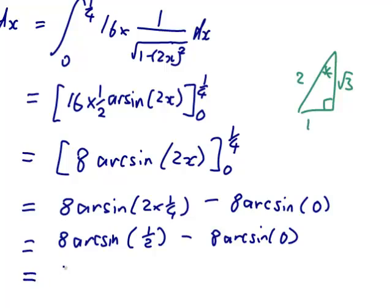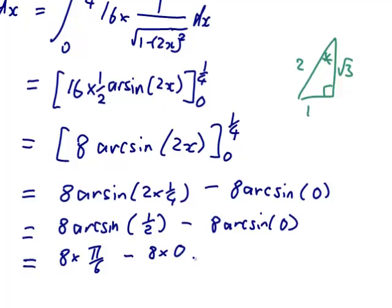So we've got 8 times pi on 6 minus 8 times an arcsine of 0 is 0. So we can cancel divide both that and that by 2. So we've got 4 pi on 3. And that looks like the end.